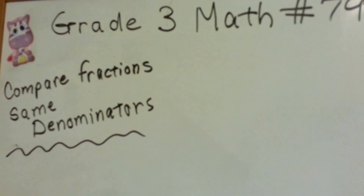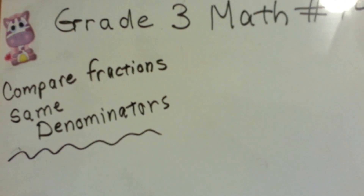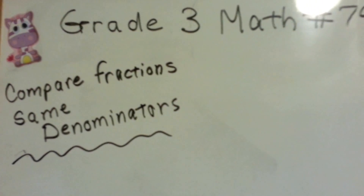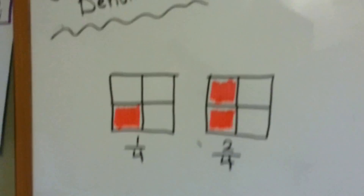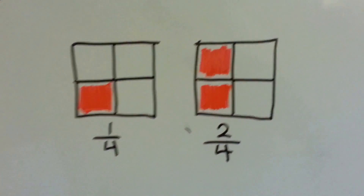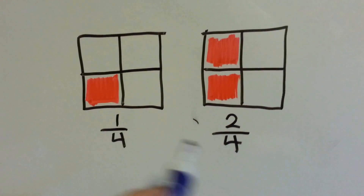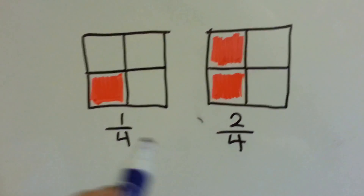Grade 3 Math, number 79: Compare fractions with the same denominators. Here we have a fraction, and here we have a fraction, and they have the same denominator.